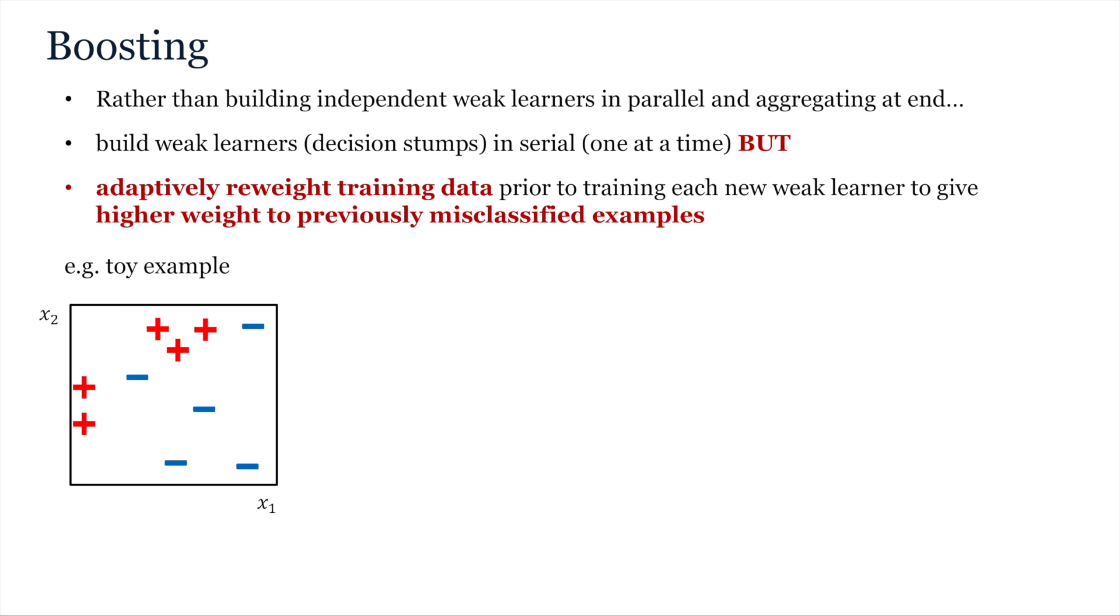To see how this works, let's step through this toy example. In this case, different classes of example are indicated by pluses or minuses. So let's imagine in this instance that we have a choice of two features, x1 and x2, and we are training decision stumps or thresholds on these.